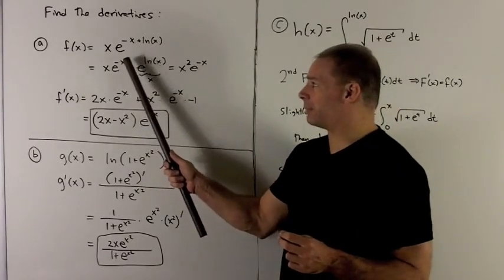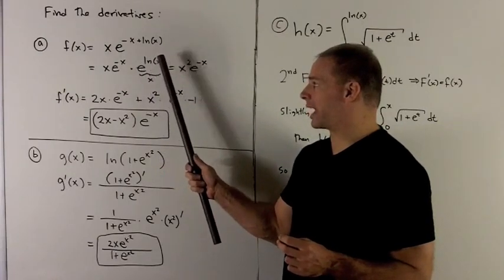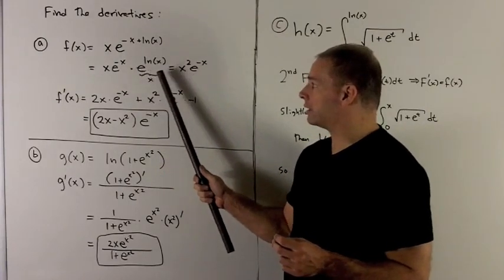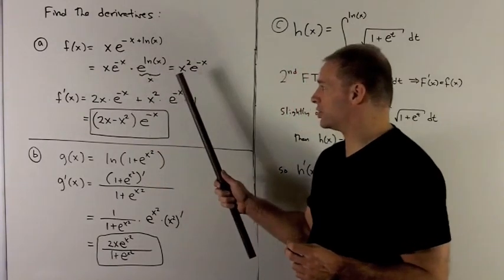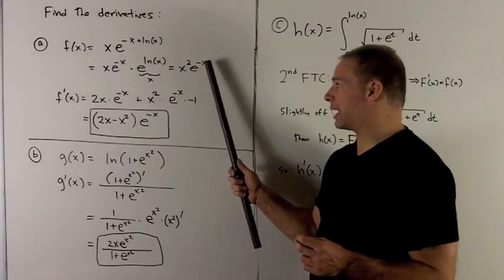So I have x, e to the minus x, e to the natural log x. This is great. This is going to collapse down to x. So my original function is just going to be x squared, e to the minus x.